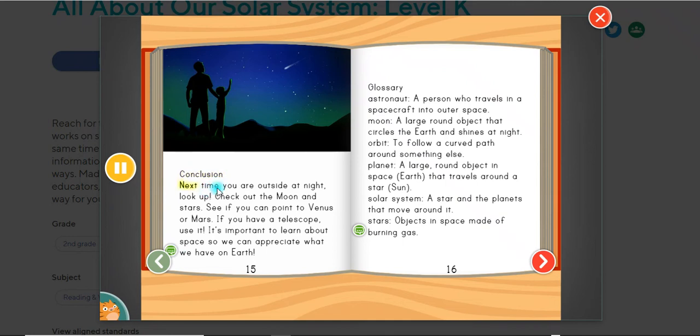Conclusion. Next time you are outside at night, look up. Check out the moon and stars. See if you can point to Venus or Mars. If you have a telescope, use it. It's important to learn about space so we can appreciate what we have on Earth.